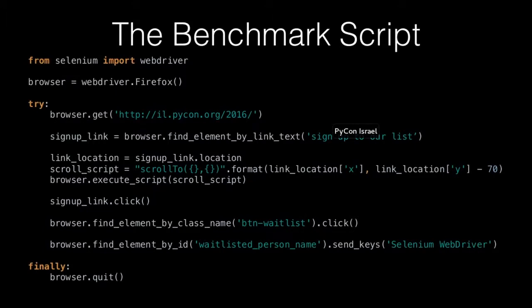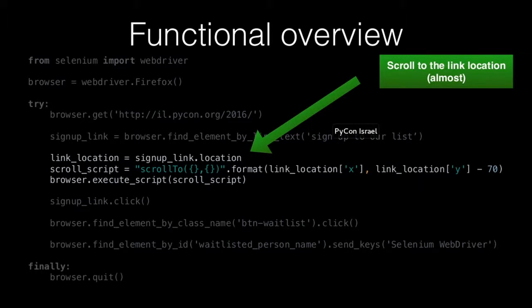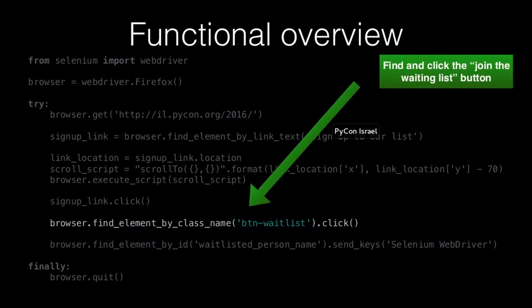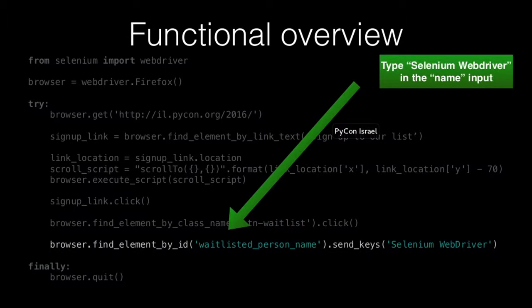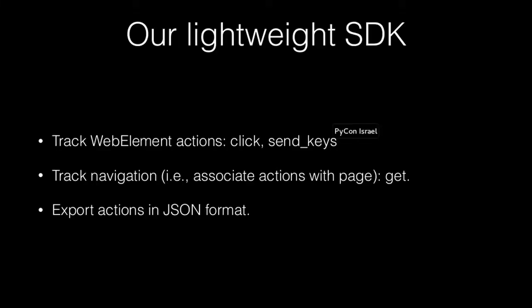To hack the Python bindings for the Selenium WebDriver, we'll use a benchmark script: open up the browser, go to the PyCon website, find the element for the signup link for the waiting list. If we try to click on an element which is not in the viewport, you get an error, so we scroll to that element and then click it. After that, we find the join waiting list button, click it, and enter the name Selenium WebDriver. Our SDK is going to track actions — click or send keys — navigations specifically using get, and export the results.